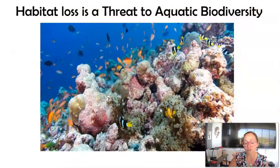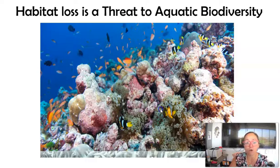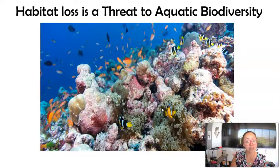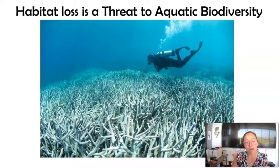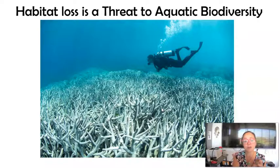We are also a threat to aquatic biodiversity. As our oceans warm, it leads to what we call coral bleaching. Coral reefs support huge areas of biodiversity with lots of different species. Coral is a symbiotic organism — a living thing that relies on a second organism, a type of protist called a zooxanthellae. Together they form an obligate mutualistic relationship.